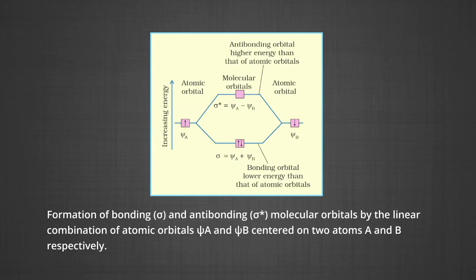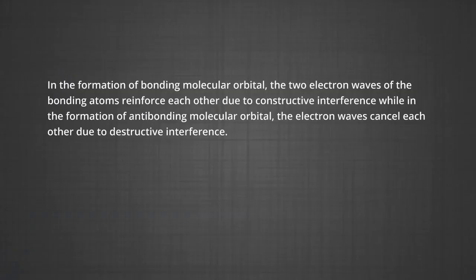Qualitatively, the formation of molecular orbitals can be understood in terms of constructive or destructive interference of the electron waves of the combining atoms. In the formation of the bonding molecular orbital, the electron waves of the bonding atoms reinforce each other due to constructive interference. While in the formation of the anti-bonding molecular orbital, the electron waves cancel each other due to destructive interference.